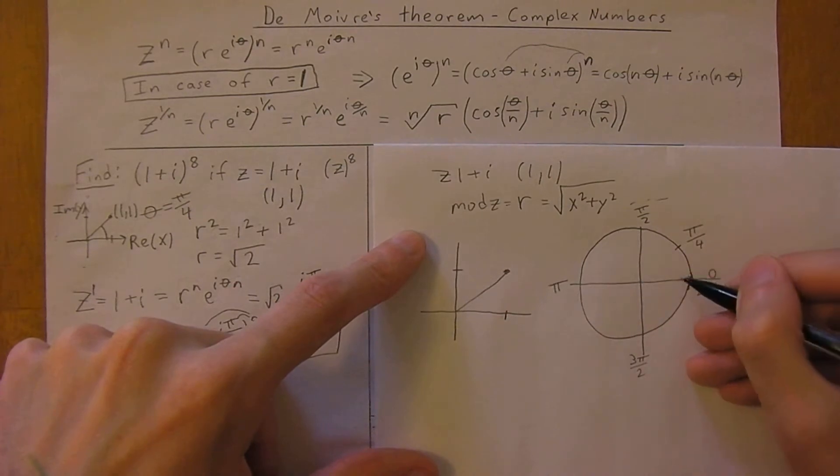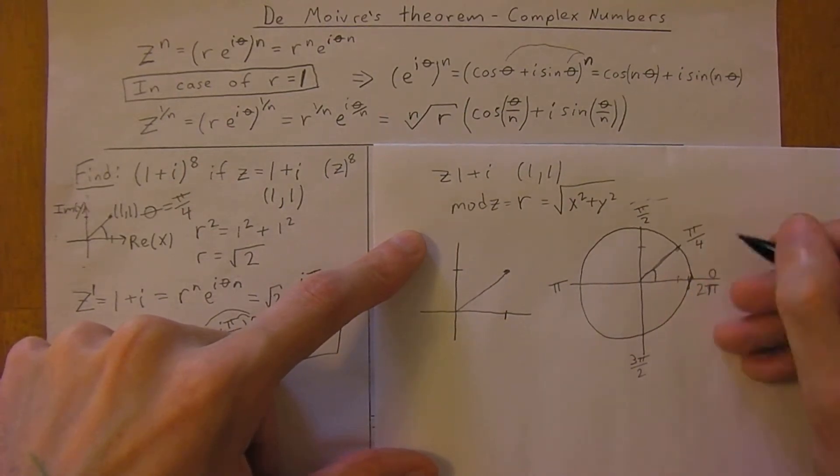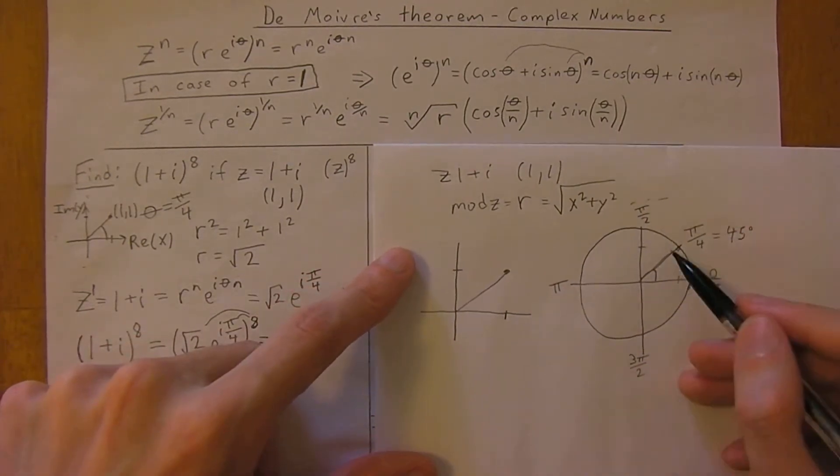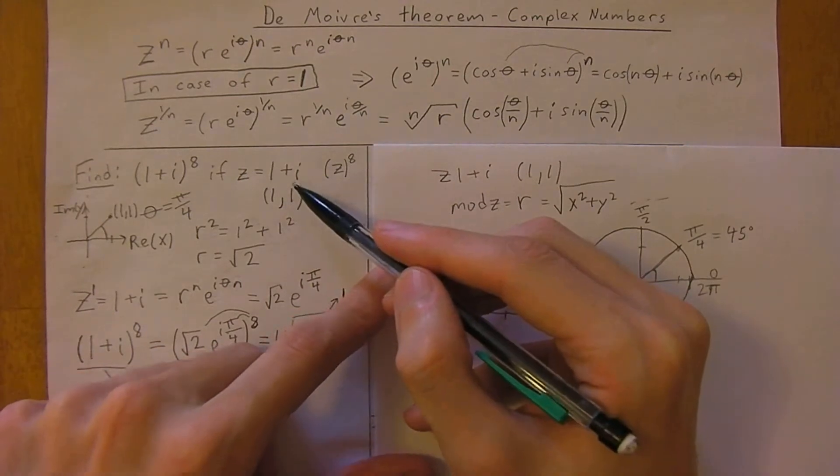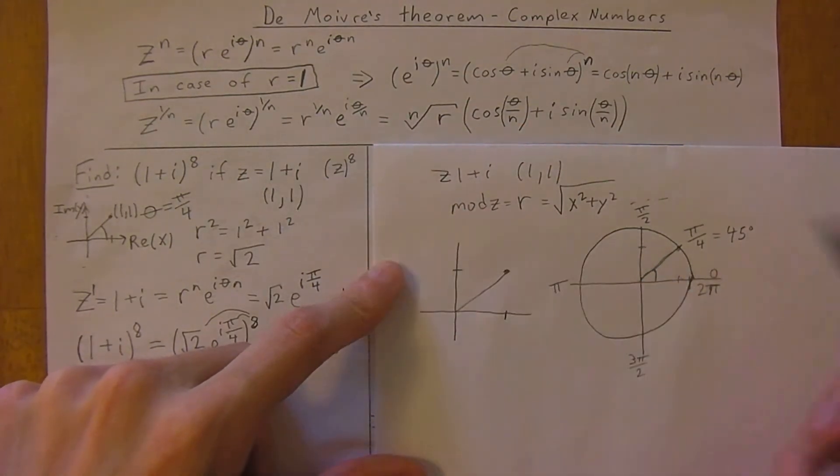In this case, we have the point 1, 1, and we know this will make a 45 degree angle. A 45 degree angle is the same in radians as pi divided by 4. So knowing that z is 1 plus i, we can get the radius as well and the angle.